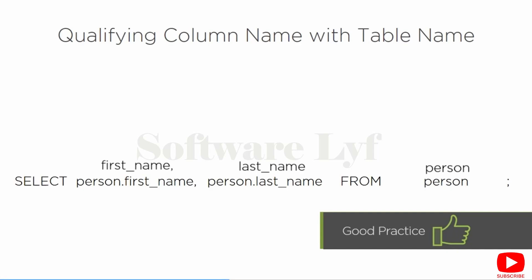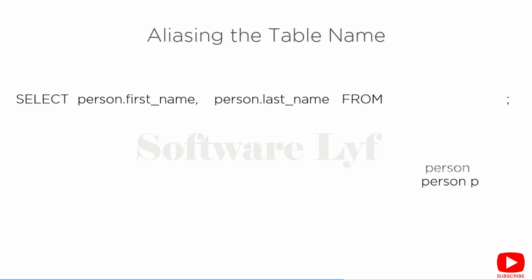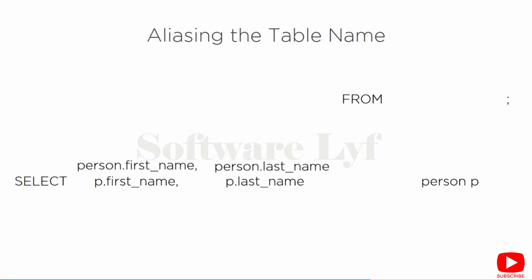Some databases will run the query faster when you have qualified the name of the column, and it makes the SQL statement much easier to read. As we get into multi-table queries, always qualifying the column names helps you disambiguate which columns are from which table. Best practice is to not only qualify all column names, but also to alias each table name. You can say person p, where p is the alias. That allows you to say p.first_name, p.last_name — and it saves you typing while keeping your SQL statement cleaner and easier to read. In the simple case, by aliasing the table name you've saved yourself 14 characters of typing.